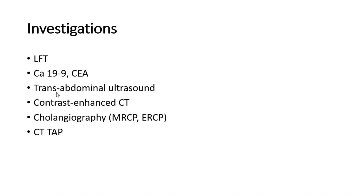Imaging such as trans-abdominal ultrasound can help identify dilatation of the bile duct and localize the site of obstruction. Contrast-enhanced CT scan — triple-phase or helical CT — is used to detect intrahepatic cholangiocarcinoma. Cholangiography can be non-invasive with MRCP or invasive with ERCP, helping to assess tumor anatomy and resectability. CT of the abdomen is used to assess metastatic spread to other organs.